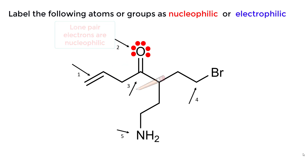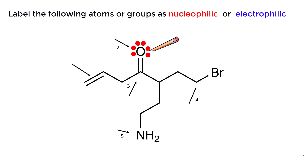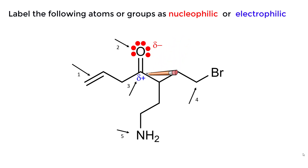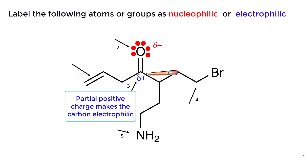The third arrow is pointing to a carbon which is bonded to an oxygen. Since oxygen is more electronegative than carbon, the oxygen will have a partial negative charge, and the carbon will have a partial positive charge. Since the carbon is electron deficient, it is electrophilic and will accept electrons from a nucleophile.